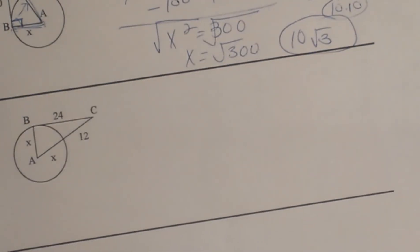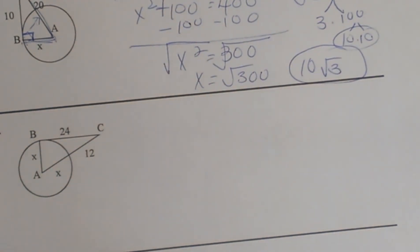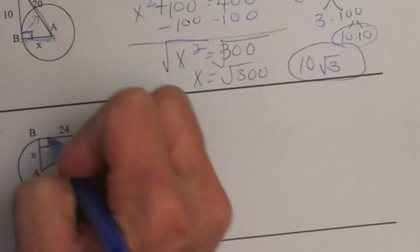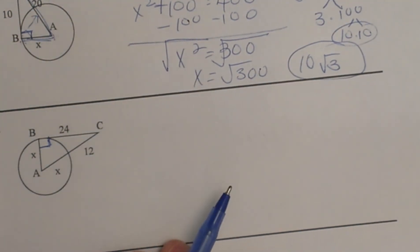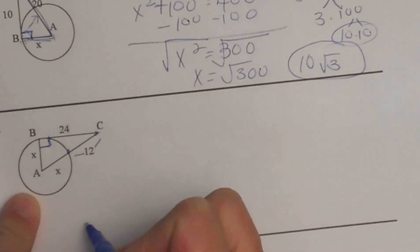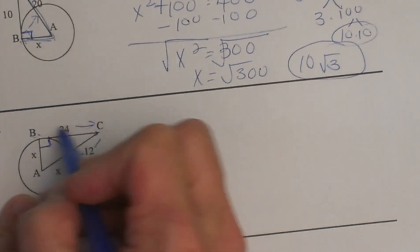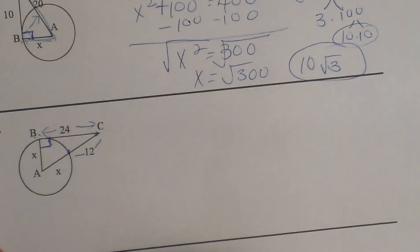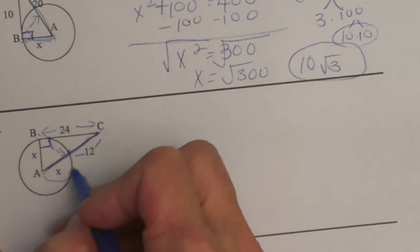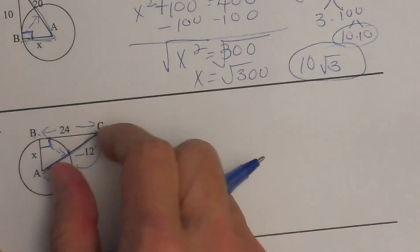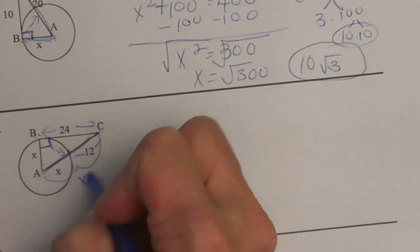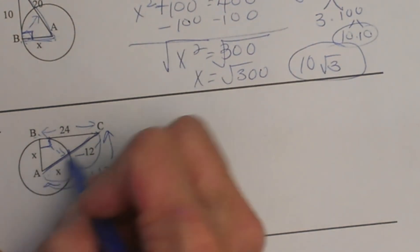Let's go down to number 3. First I want to figure out where is my right angle. Here is my radius and here is my line of tangency, so my right angle is again going to be at B. This time I have different information: all I know is my radius is x, the distance from the circle to C is 12, and B to C is 24. The hypotenuse is AC — the longest side — and that is these two parts put together: x plus 12 represents AC.